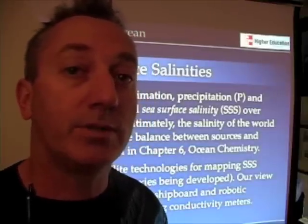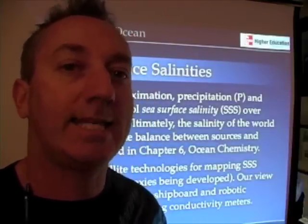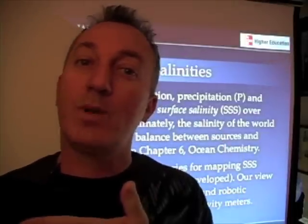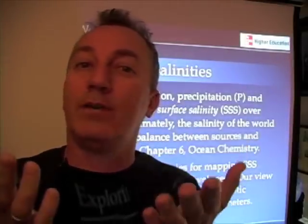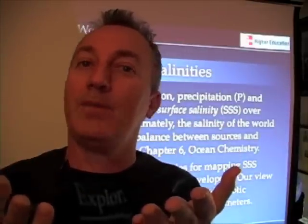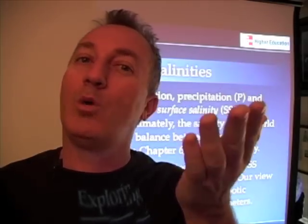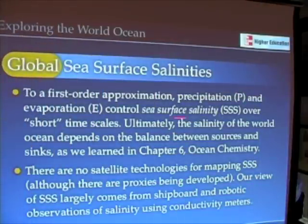If we're going to call sea surface temperatures SSTs, we should call sea surface salinities SSSs. Remember, salinity — and I suggest you go back to that chapter again — is the result of differences in evaporation and precipitation. If we have evaporation, we'll have higher salinities. If we have precipitation, we'll have lower salinities. So it's evaporation and precipitation that control sea surface salinities.